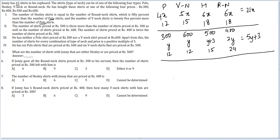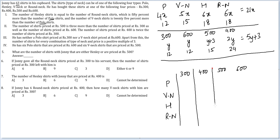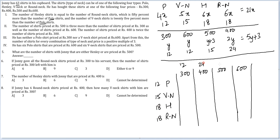The best way to represent this data now is a grid. We know polo is 12, V-neck is 15, Henley is 18, round neck is 18, and prices: 300 is 12, 400 is 24, 500 is 15, 600 is 12.